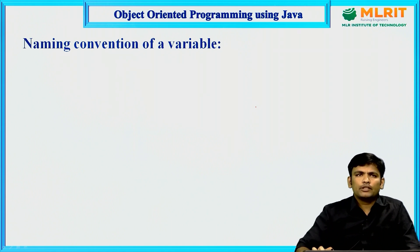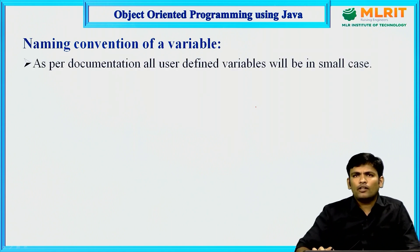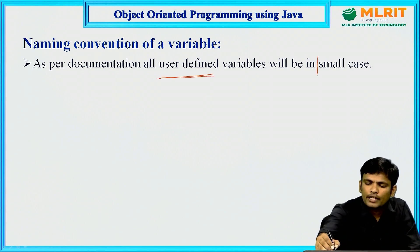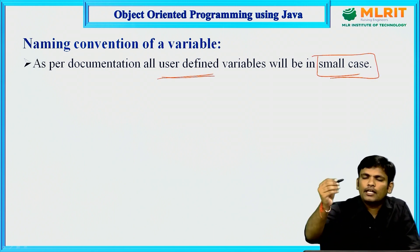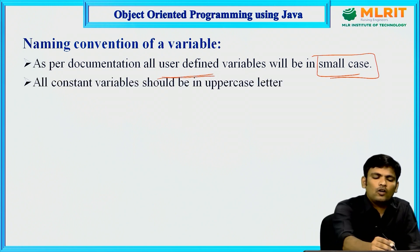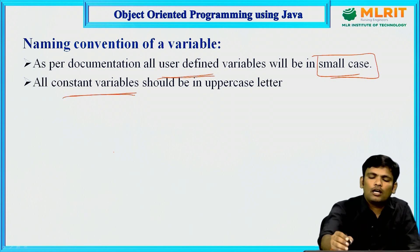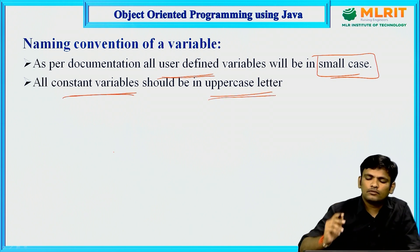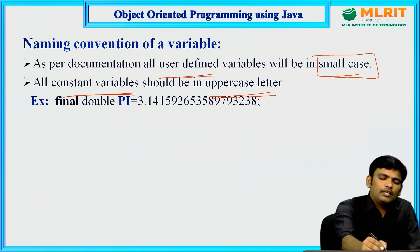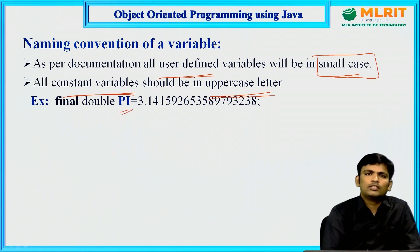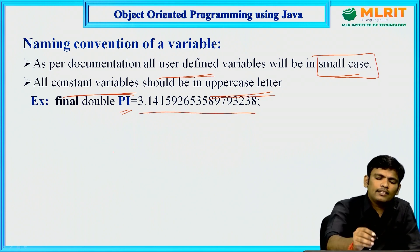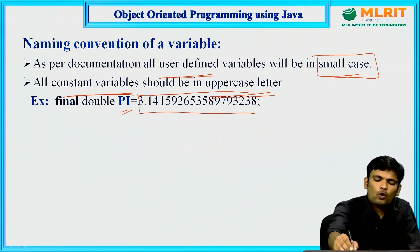Regarding naming conventions: as per Java documentation, all user-defined variables must be in small case. All constant variables must be in upper case letters. For example, final double PI = 3.141 — the PI value is a constant and should be in upper case.